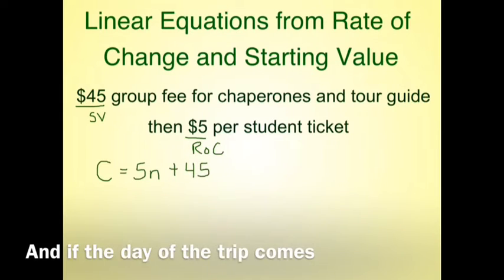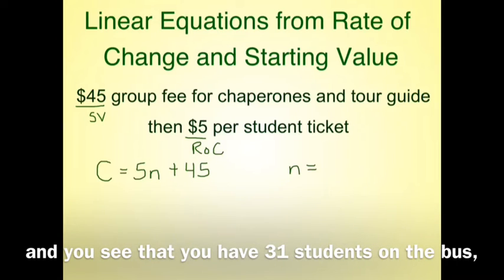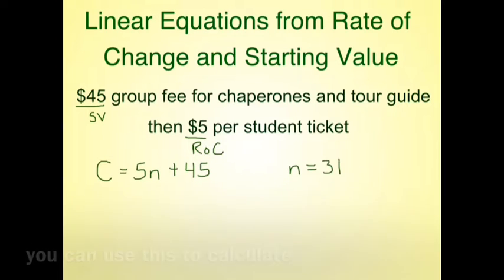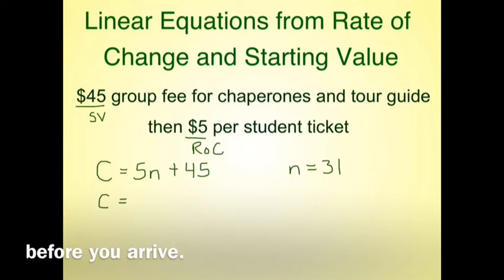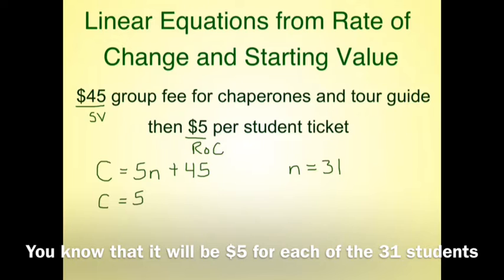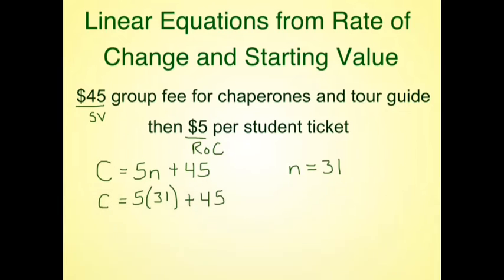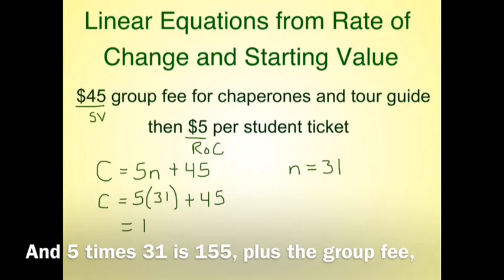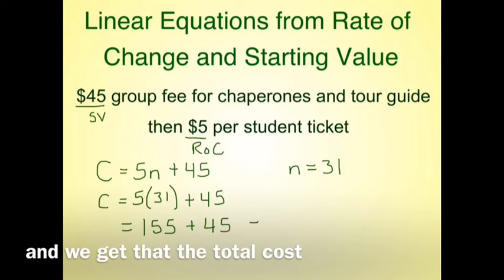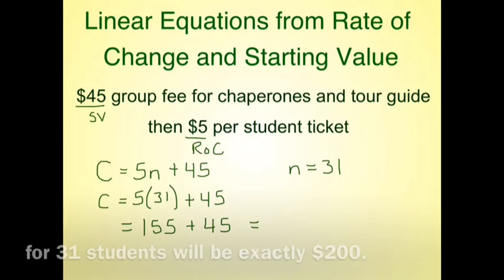And if the day of the trip comes and you see that you have 31 students on the bus, you can use this to calculate what the total cost will be before you arrive. You know that it will be $5 for each of those 31 students plus the $45 group fee. And 5 times 31 is $155 plus the group fee, so the total cost for 31 students will be exactly $200.